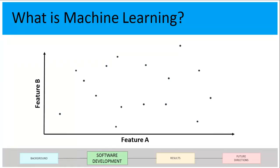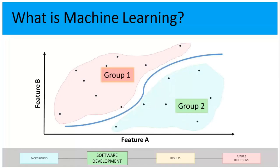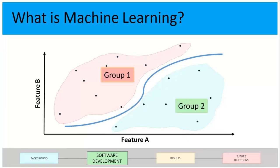Machine learning is a pretty complicated process, so I'll simplify it. Let's say we have two features, feature A and feature B. We take the height and weight of every person in this room and graph them on a scatter plot. All of these people would be, let's say, female, and those are all the males. The program would create some line or decision-making process that says any person on this side of the line is probably female and any person on that side is probably male.